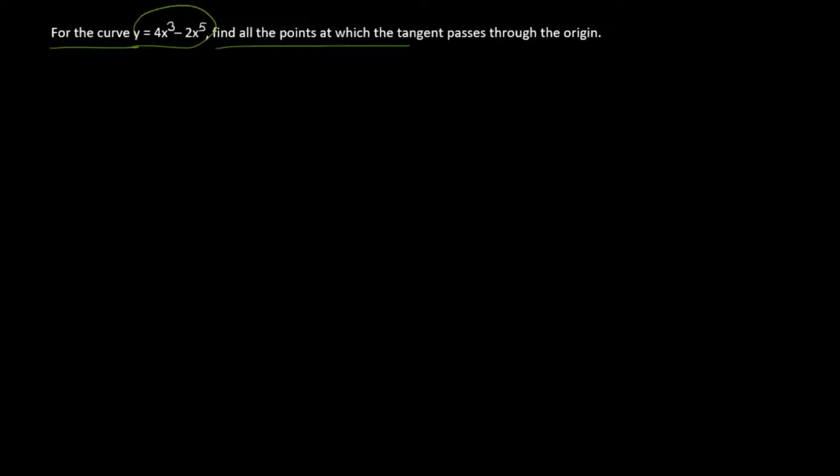For the curve y = 4x³ - 2x⁵, find all points at which the tangent passes through the origin. A tangent has a general equation, so let's get some insight on what we can do.